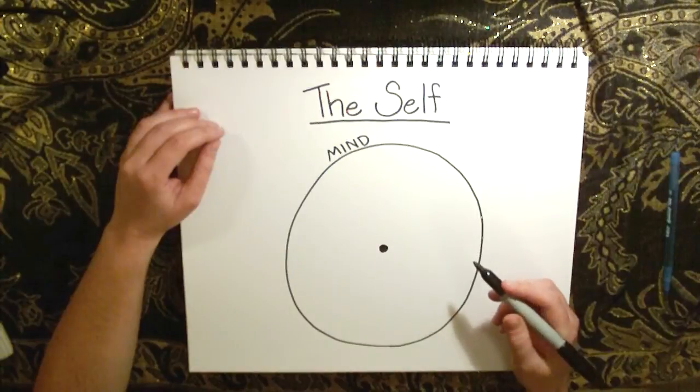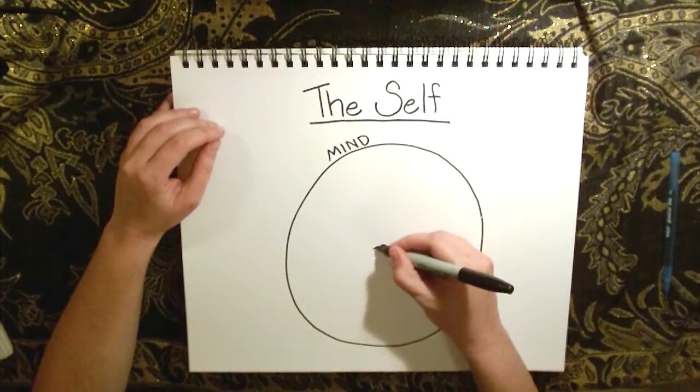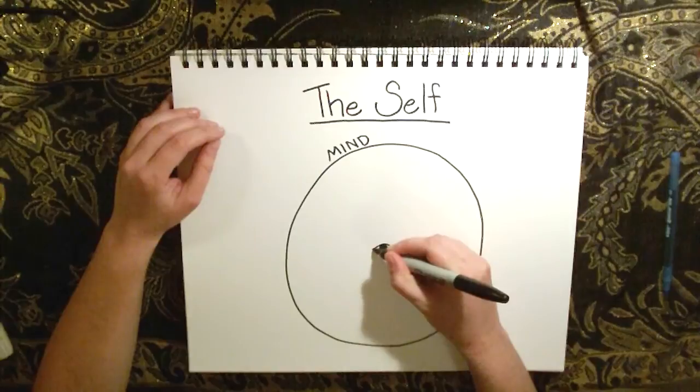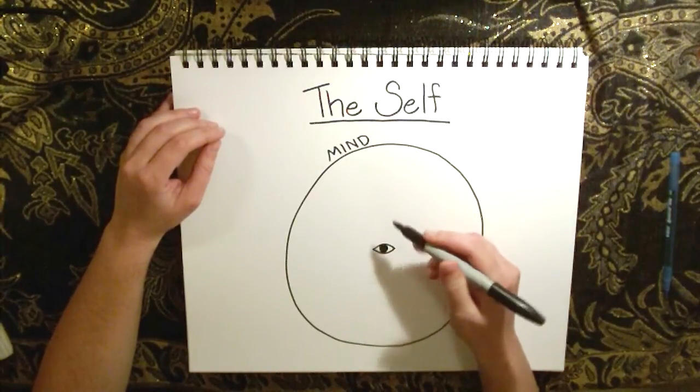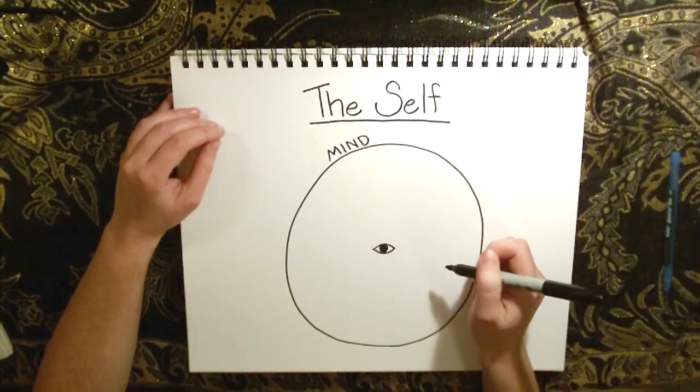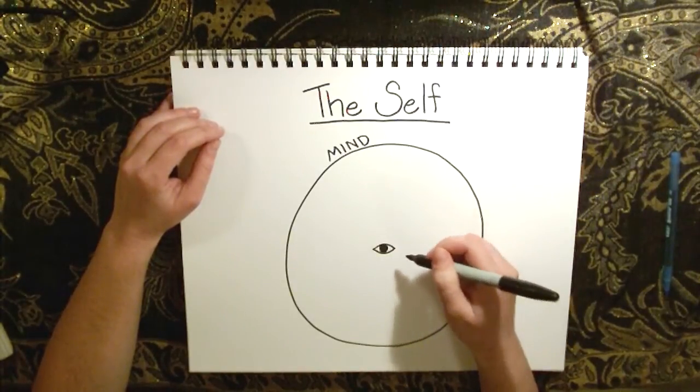And the reason for this is that it's like an eye. It sees everything that happens around it but it cannot see itself.